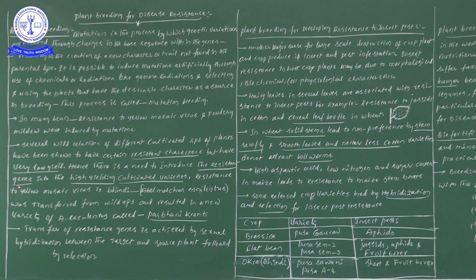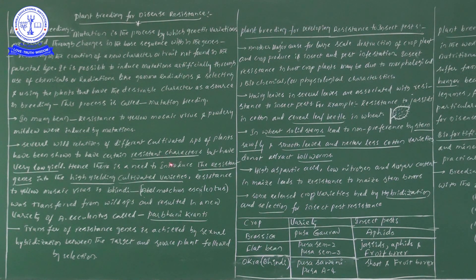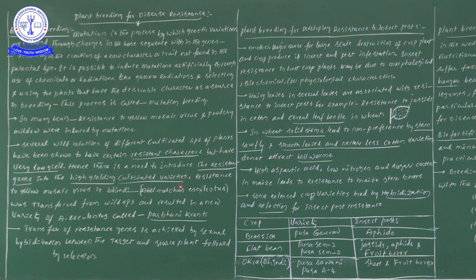The resistant characters from wild varieties are now being induced into high-yielding cultivated varieties. When we introduce all these resistant characters into high-yielding varieties, in the next generation both characters — resistance and high yield — can be seen in that single variety.